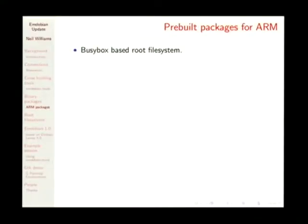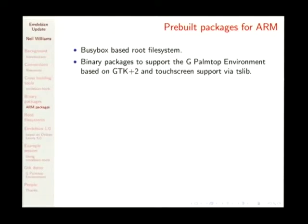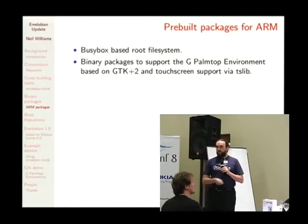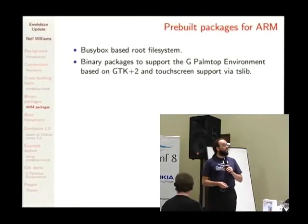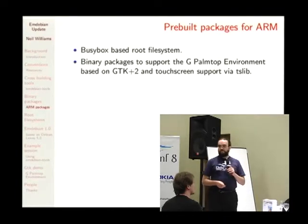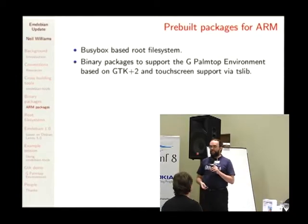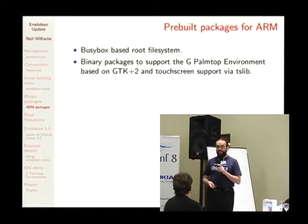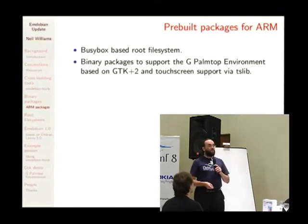We base ourselves on BusyBox to get rid of coreutils and to get rid of Perl — we use a fairly large config for BusyBox and try to use as much of it as we can. We've got binary packages working up to the full X server, GTK+ 2, the GPE environment, and touchscreen support. I was hoping to demonstrate touchscreen support with the Balloon 3, but yesterday it developed a hardware error — the Y axis works but the X axis is always the same. We're going to work on that when we get back.